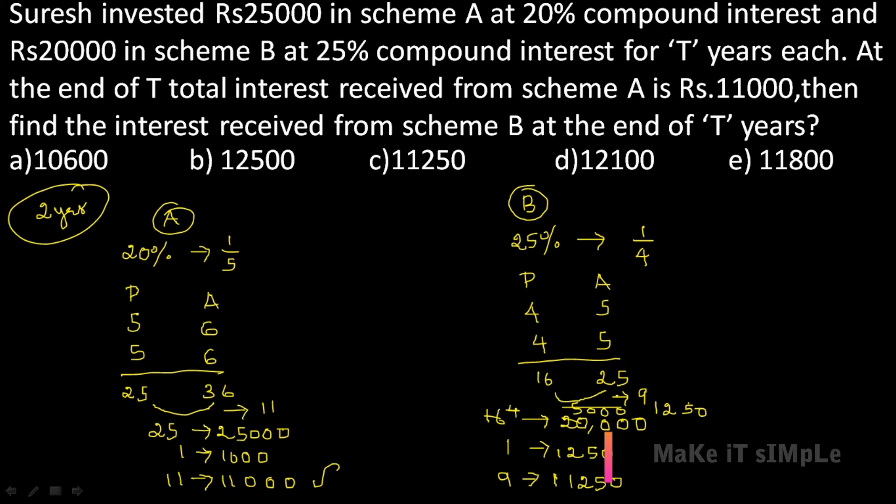On seeing this question, you might feel it will take some time and you wouldn't attempt it in an exam. But in this question, even though two different compound interest schemes with different sums and different rates are given, using this shortcut you can solve it very quickly. Just apply it in the exam.